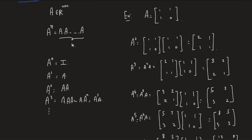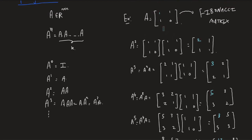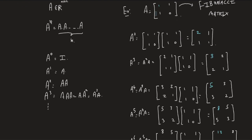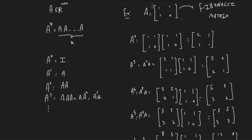By the way, this matrix A is referred to as the Fibonacci matrix. You might be wondering about the famous Fibonacci sequence — it's related. If you look at the entries sitting at position (1,1) of each successive power, they are actually the Fibonacci sequence: 1, 2, 3, 5, 8, 13, and so on. That's why this matrix is called the Fibonacci matrix — it generates the Fibonacci sequence through its successive powers.